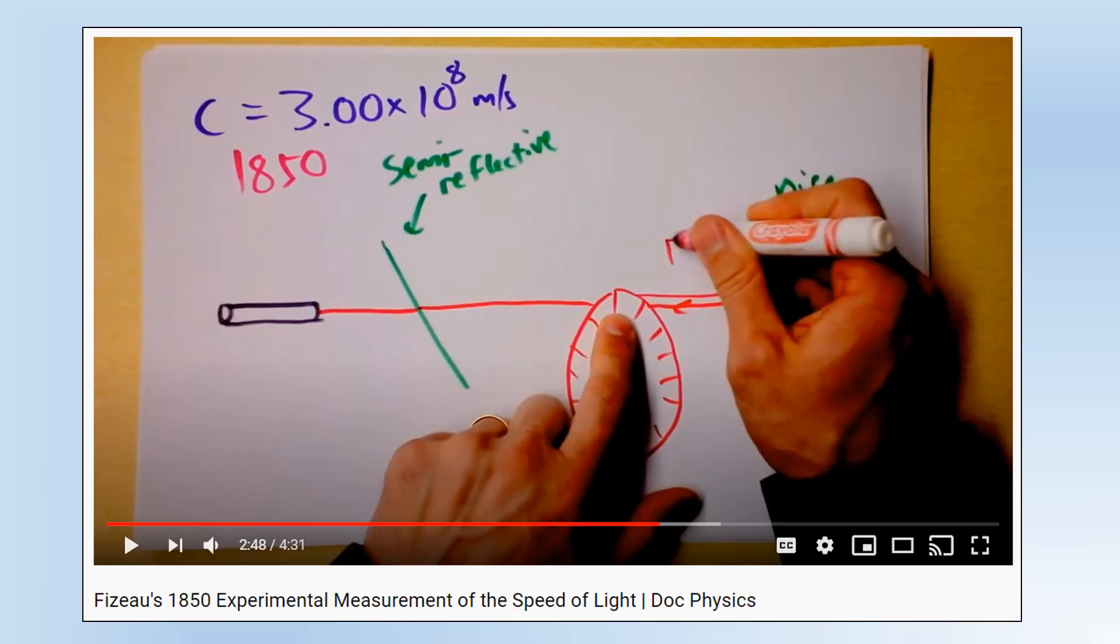If you're interested in how they actually went about measuring the speed of light, it's quite a simple little experiment, but a really neat idea. That was done by a physicist called Fizeau. DocPhysics has a really nice video on this, so I would highly recommend you check that out.